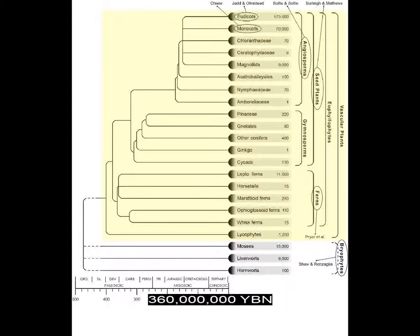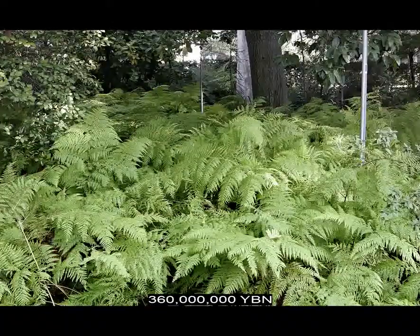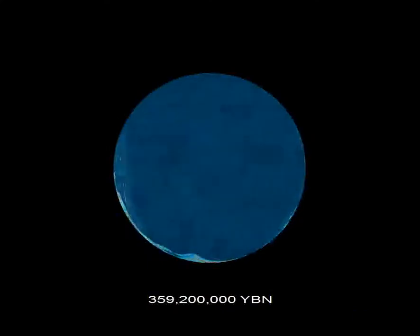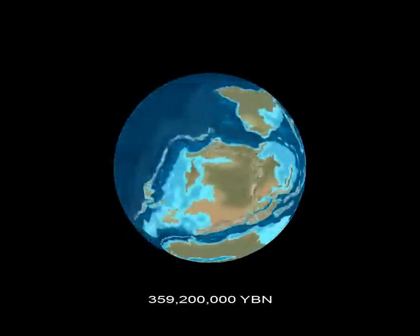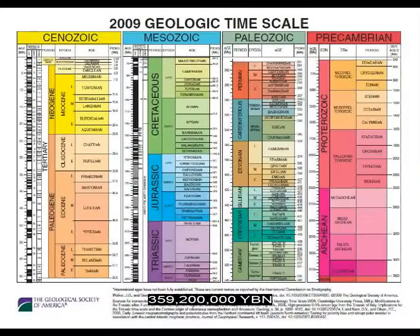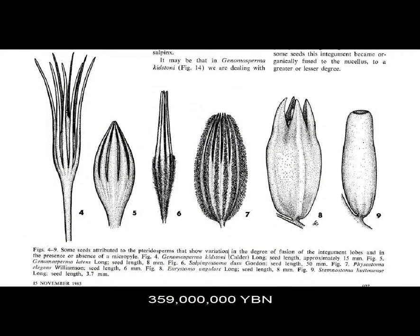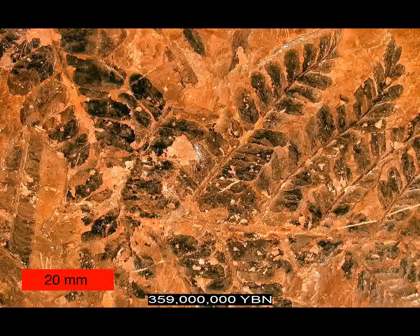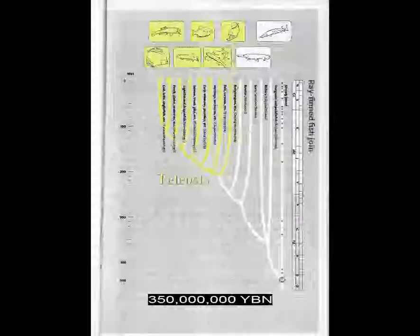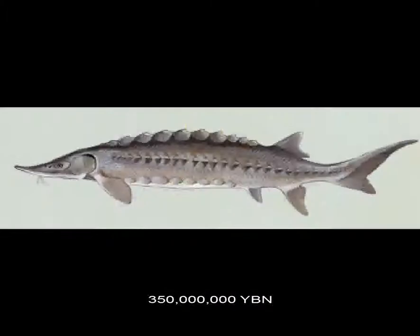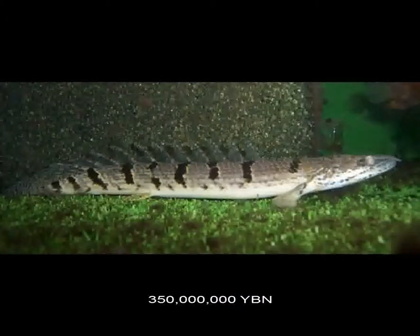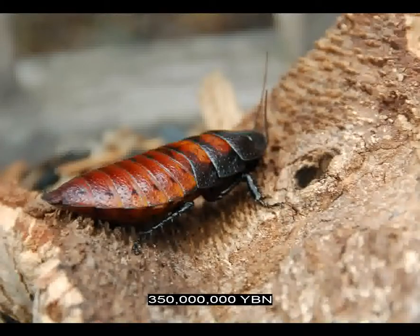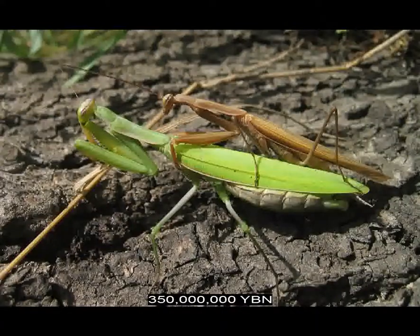Vascular plants: ferns evolve — club mosses, ferns, and horsetails. The Neoptera — folding-winged insects. End of the Devonian and start of the Carboniferous Period. The first plant seed evolves — ancestor of all seed plants. The earliest fossil seed is from a seed fern, a pteridosperm. Ray-finned fishes: sturgeons and paddlefish. The Neoptera Dictyoptera — ancestor of cockroaches, termites, and mantises.